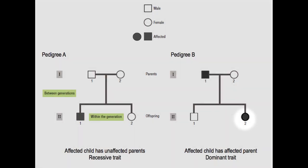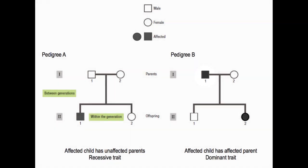In pedigree B, we see that the daughter, 2-2, is affected, as is her father, individual 1-1. If we see that all affected individuals have an affected parent, then we can deduce that the trait is dominant.